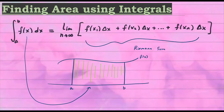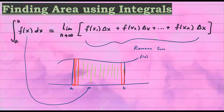What you're really doing is constructing tiny, tall, very skinny rectangles — tiny, tiny rectangles whose heights are right here. You're creating an infinite number of them up to the last point. When you sum up all these tall rectangles, you get this definite integral, which represents the area underneath this curve.